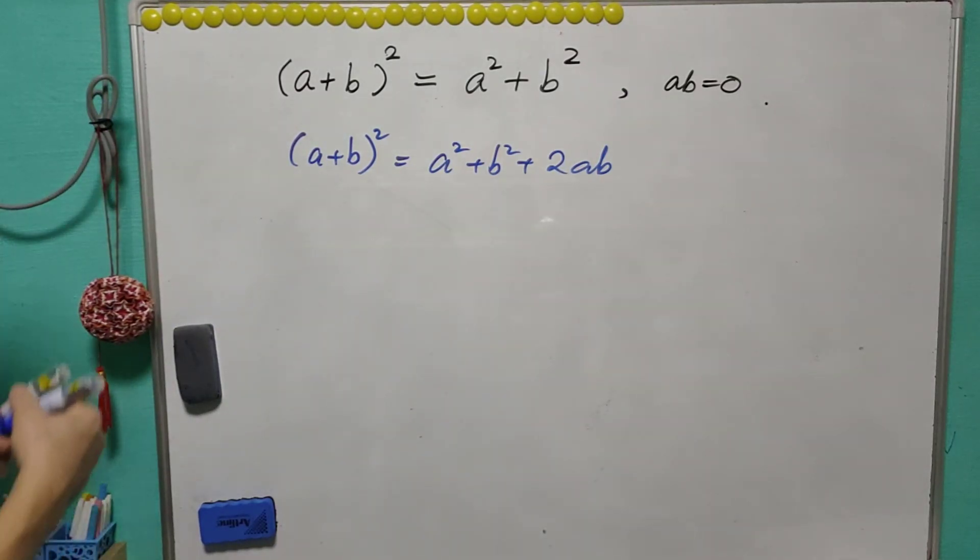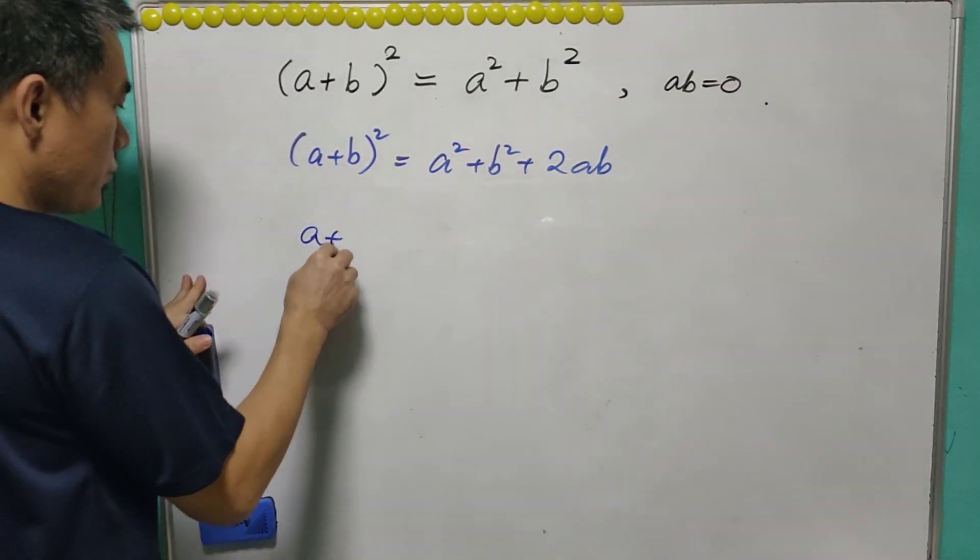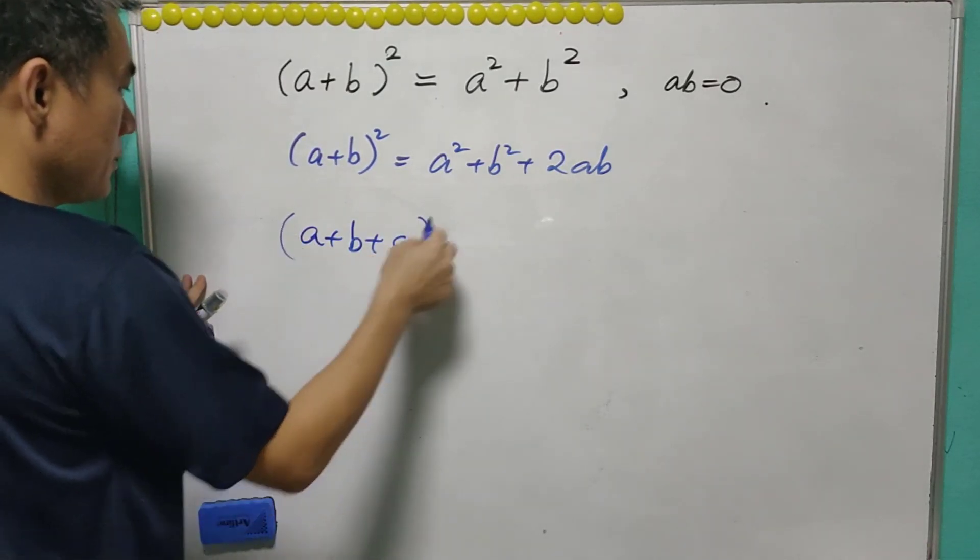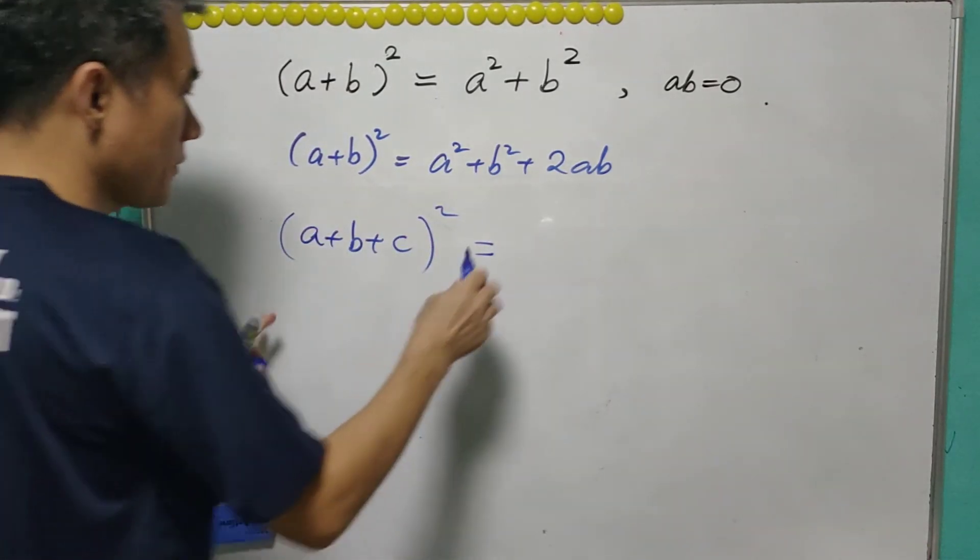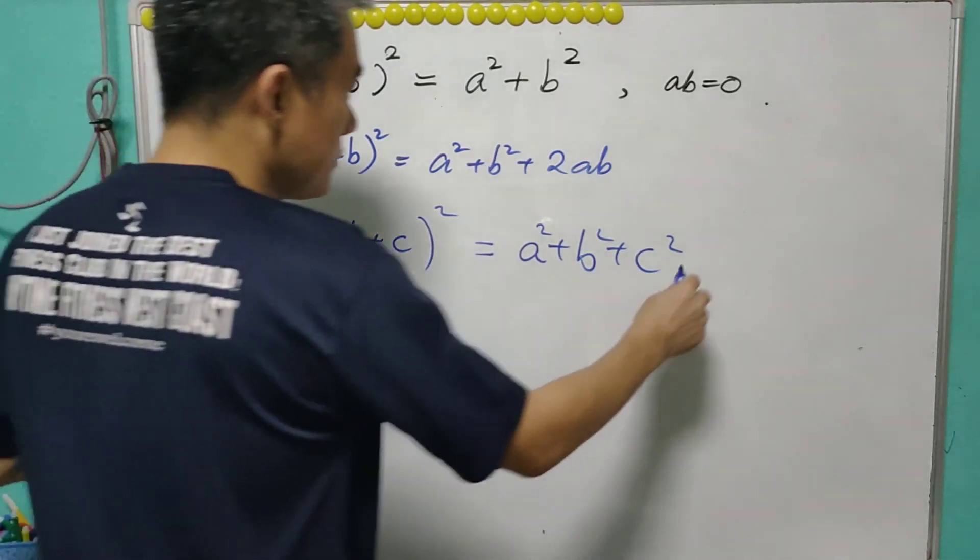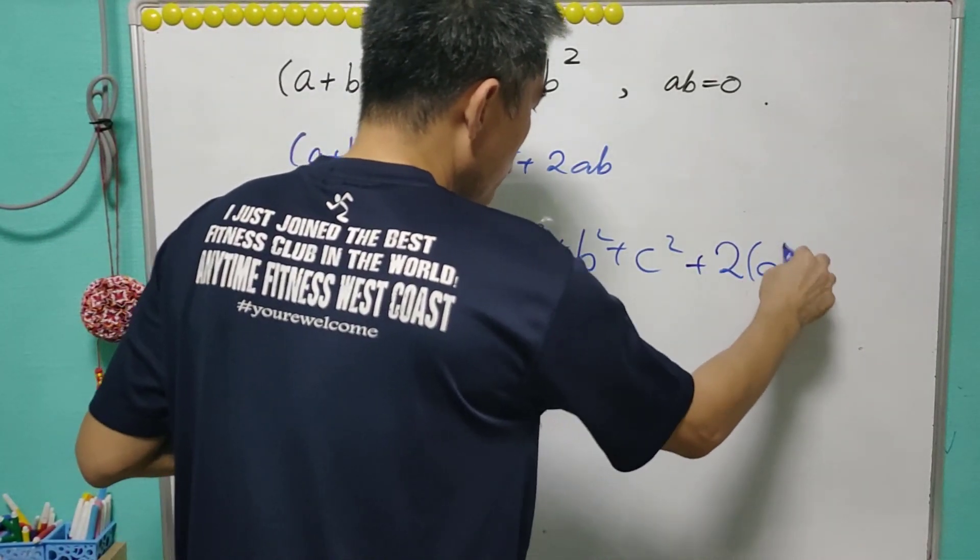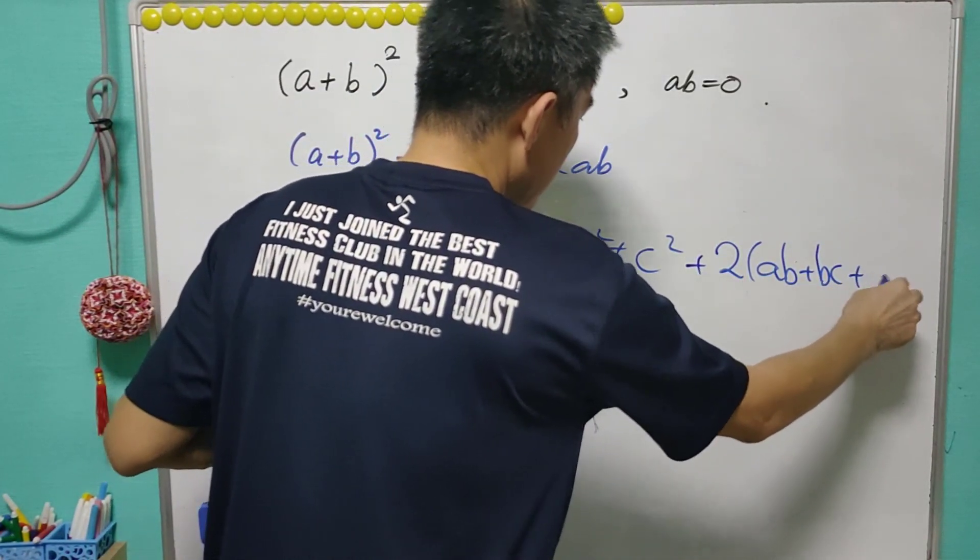Then we'll ask what happens when we have more of that: square of a, b, and c. The actual expression for this is equal to a square plus b square plus c square plus 2ab, bc, and ca.